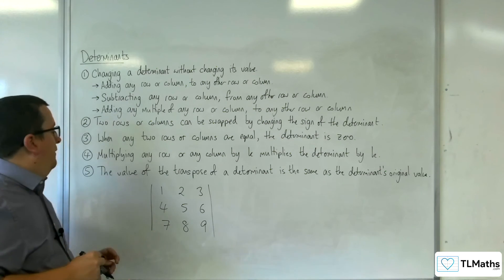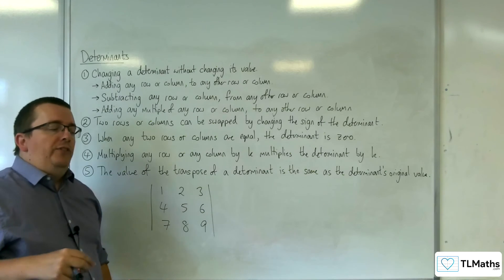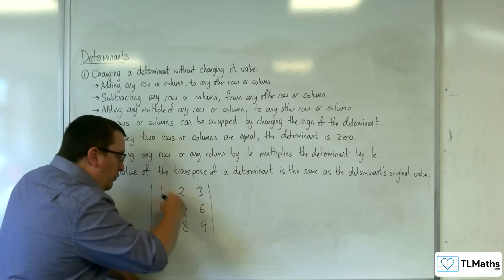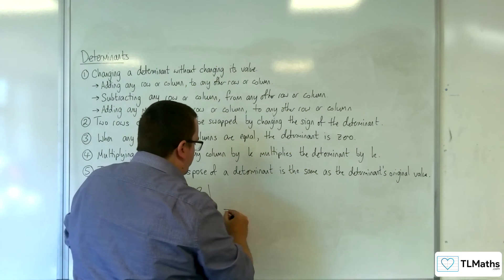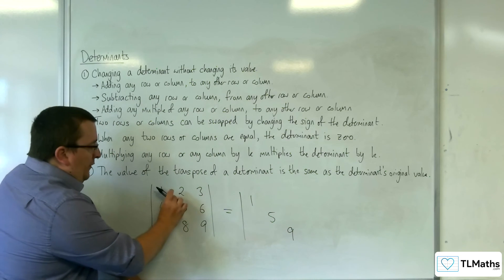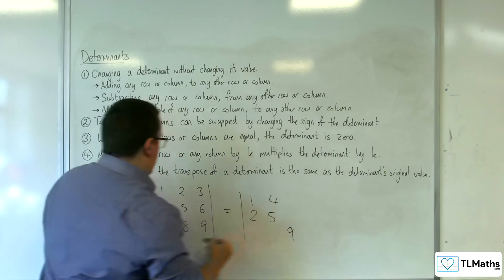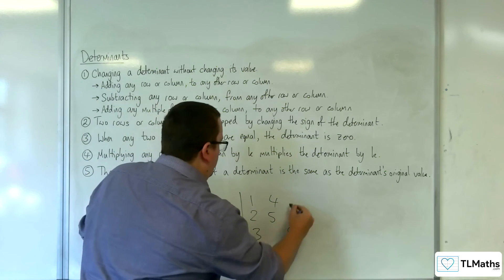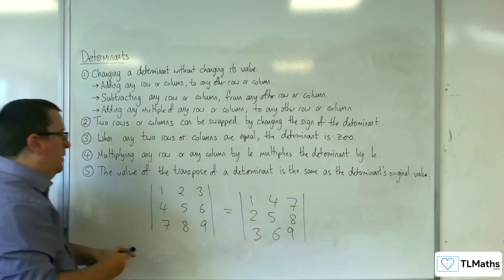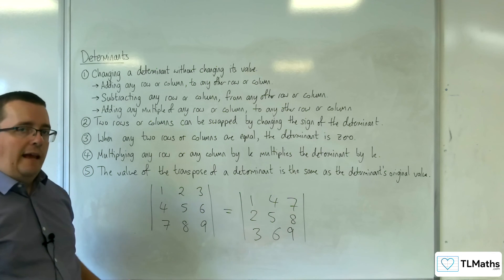Now, the last thing to be aware of is that the value of the transpose of a determinant is the same as the determinant's original value. So, the transpose, what that does is it keeps the leading diagonal, the principal diagonal, exactly the same. So, 1, 5, 9. But uses that as a mirror line. So, the 2 and the 4 will swap, the 3 and the 7 will swap, and the 6 and the 8 will swap. So, the determinant of each of those two matrices would be exactly the same.